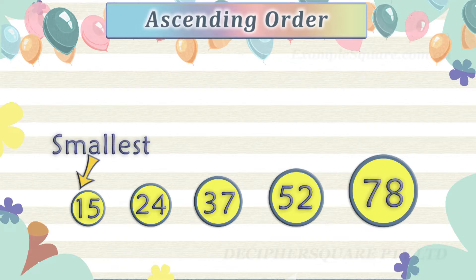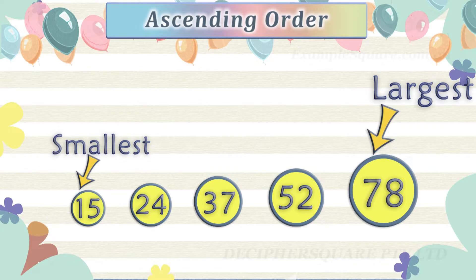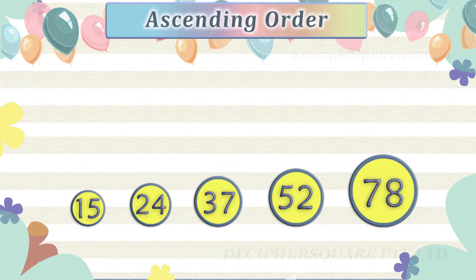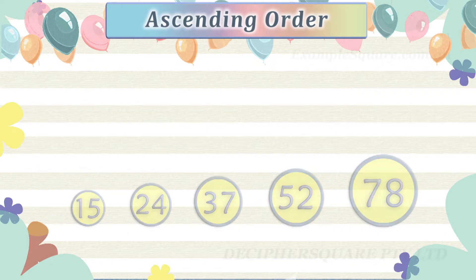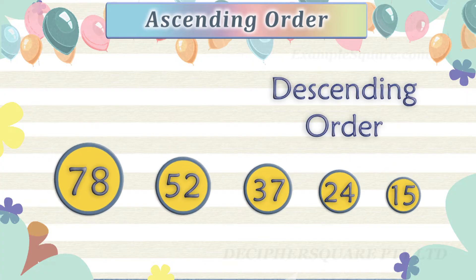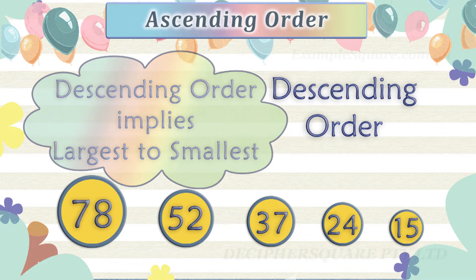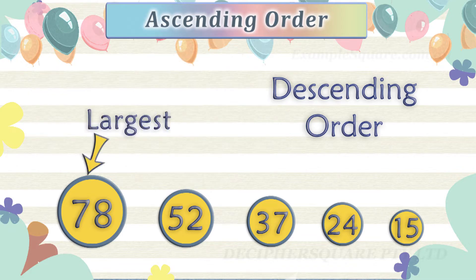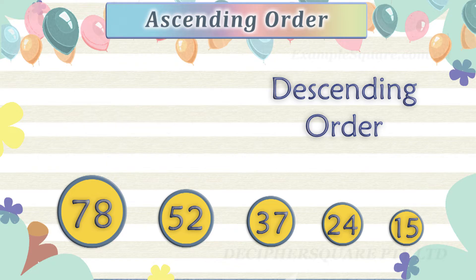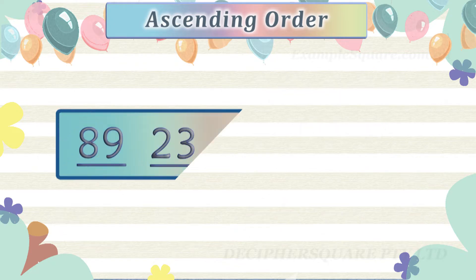When the numbers are arranged in ascending order, the smallest number comes first and the largest number comes last. Arranging numbers in ascending order is the opposite of arranging numbers in descending order. Numbers arranged in descending order are in decreasing order, that is from the largest number to the smallest number.